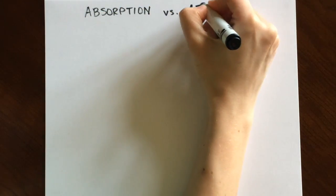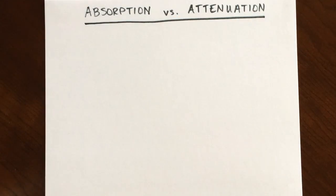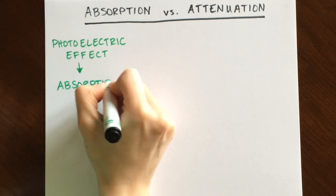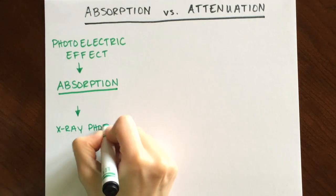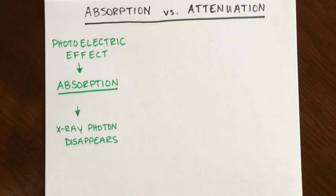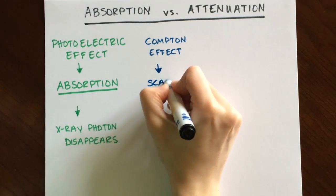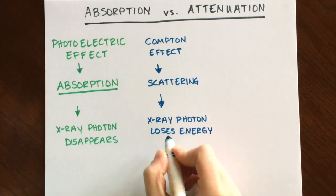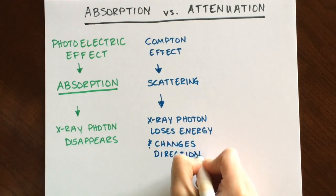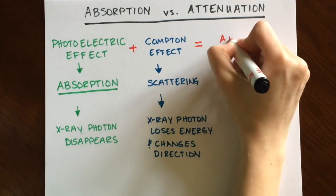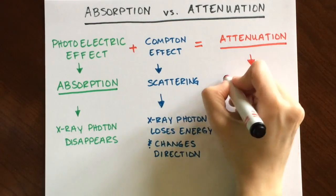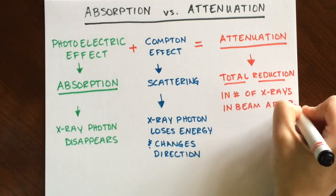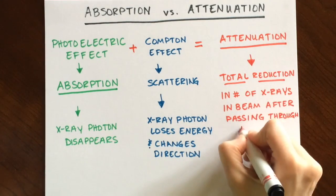Finally, we need to discuss the difference between two terms, absorption and attenuation. With absorption, it is considered an all-or-none process. Either the x-ray is absorbed and disappears, or it doesn't. If an x-ray is partially absorbed, it is considered a scattering interaction, since the x-ray photon emerges with less energy and in a different direction. Attenuation is the product of absorption and scattering. It is the total reduction in the number of x-ray photons remaining in the beam after passing through a given thickness of tissue.